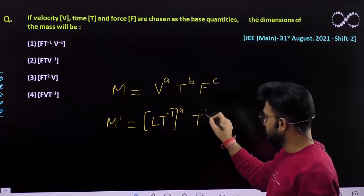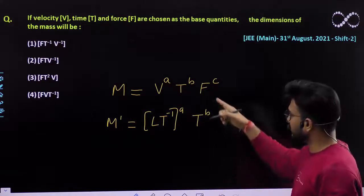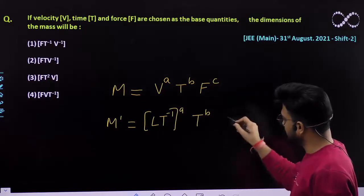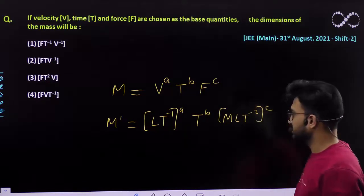Again, t raised to power b. t is time, dimension of time is T only. And what about the dimension of force? It is MLT^-2, raised to power c.